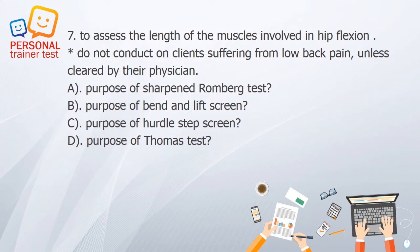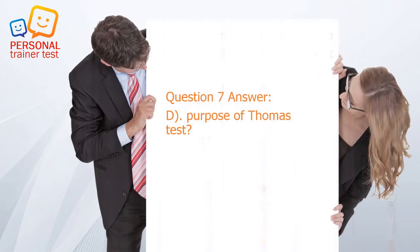Question 7. A. Purpose of Sharpened Romberg test. B. Purpose of bend and lift screen. C. Purpose of hurdle step screen. D. Purpose of Thomas test. Answer: D. To assess the length of the muscles involved in hip flexion. Do not conduct on clients suffering from low back pain unless cleared by their physician — purpose of Thomas test.